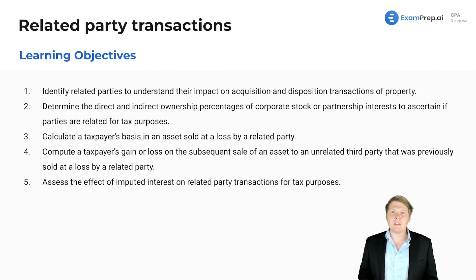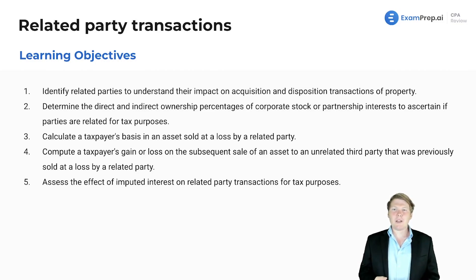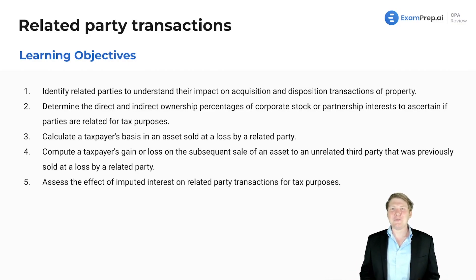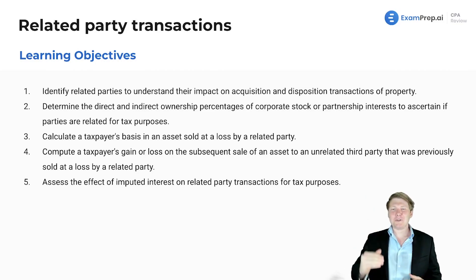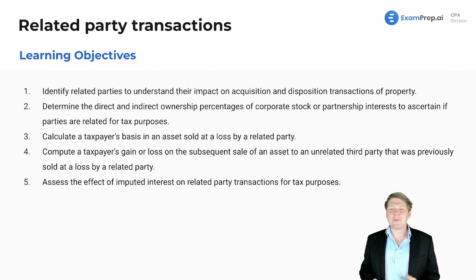We also want to compute a taxpayer's gain or loss on the subsequent sale of an asset to an unrelated third party, where that asset was previously sold at a loss by a related party. We'll walk through multiple scenarios, changing one thing at a time to see what happens.